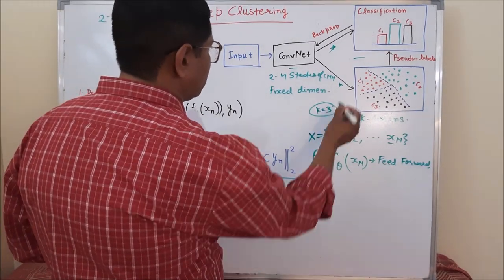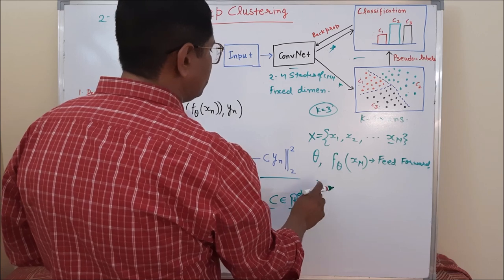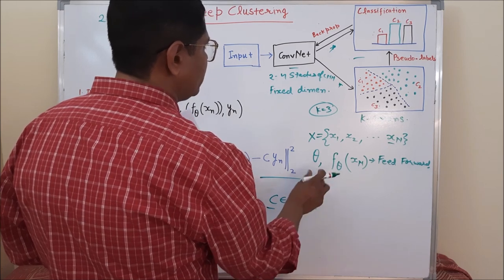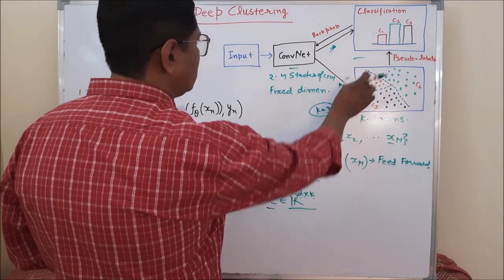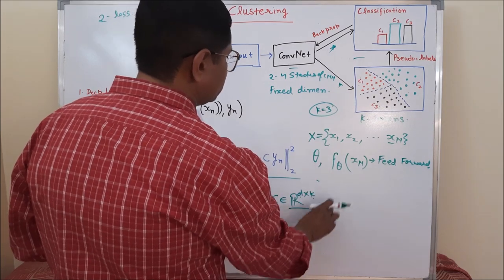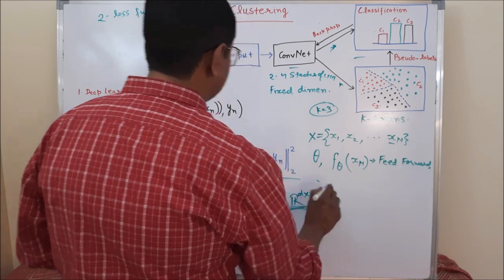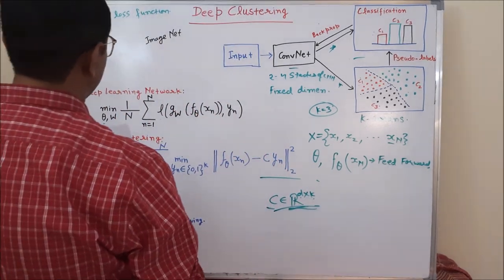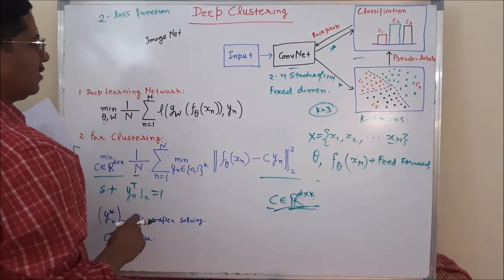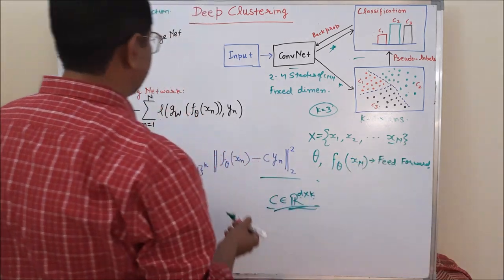So suppose we had take the cluster C1, then it will mean our column C1 will represent the cluster point C2 like that. So kind of matrix. So what is N? We already know that N is the total number of images.